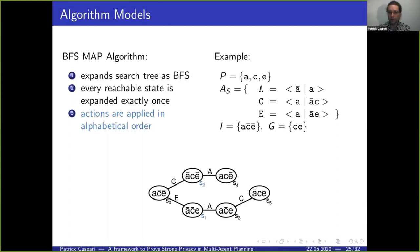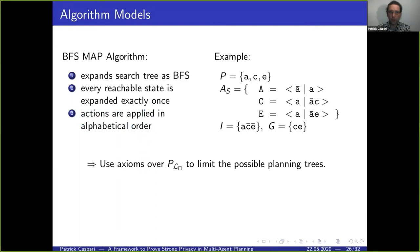Certain planning trees are invalid under this algorithm. For example, since we use breadth-first search, all successors of s3 are considered before successors of s4, so s5 would not be a successor of s4. A tree that expands the same state twice is also invalid. And we can't swap the execution order of actions — the tree must expand action C before action E. So the algorithm's formulation directly implies a set of rules defining which planning trees are valid.